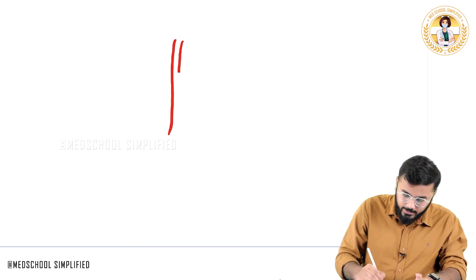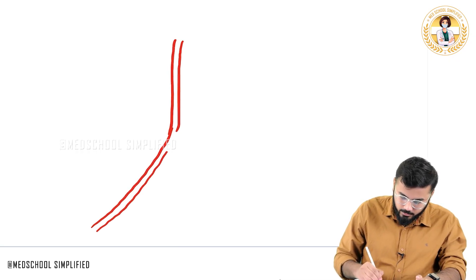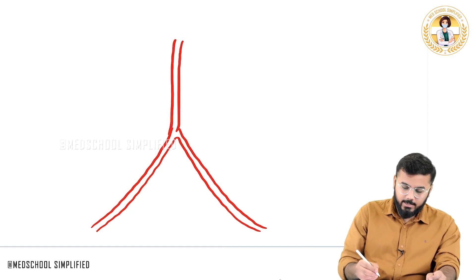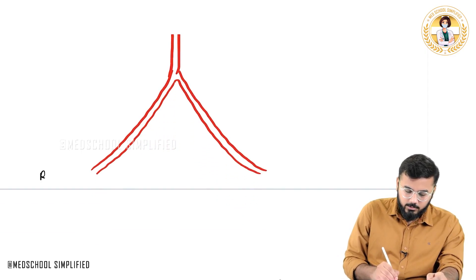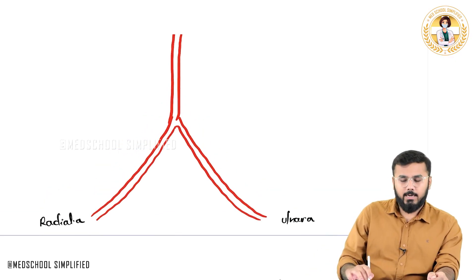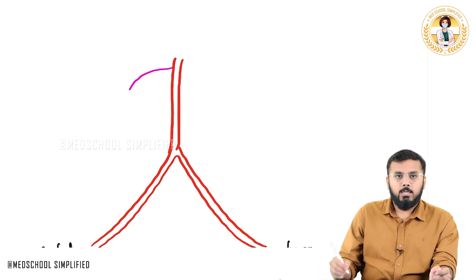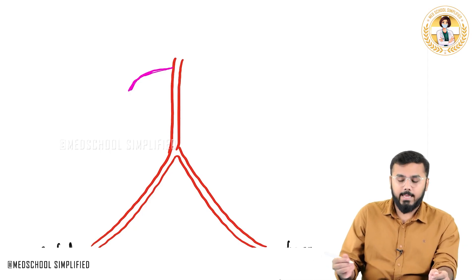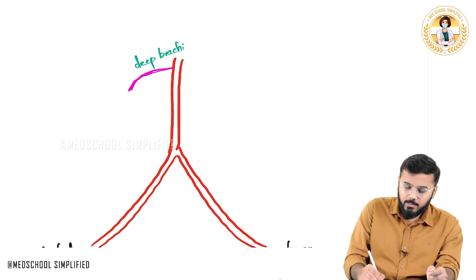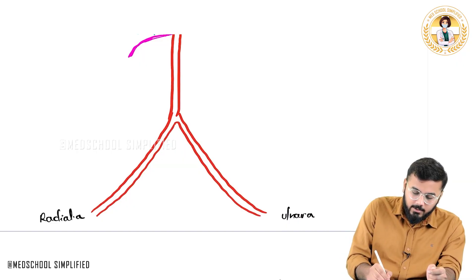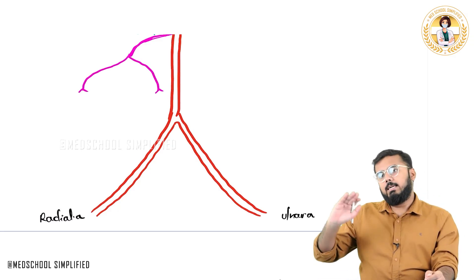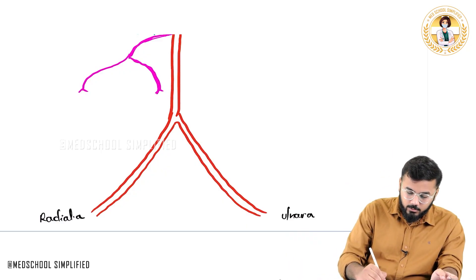Let me draw the picture in a bit more detail. The brachial artery divides into the radial artery on one side and the ulnar artery on the other side. The brachial artery gives out a branch called the deep brachial artery. This deep brachial artery then divides into two more important branches.